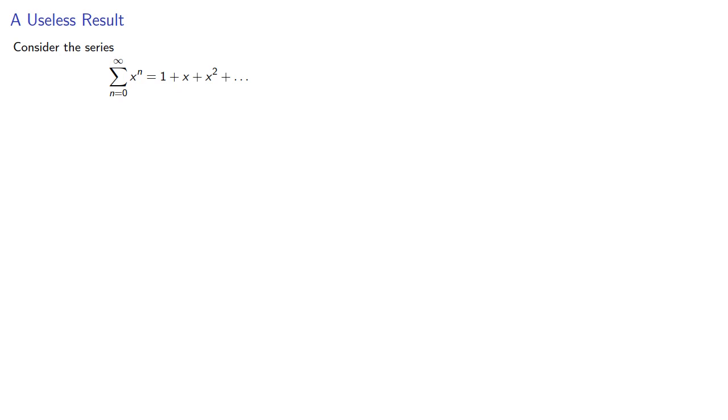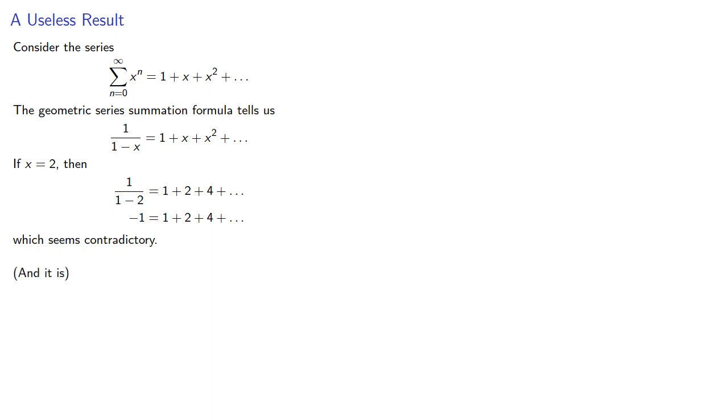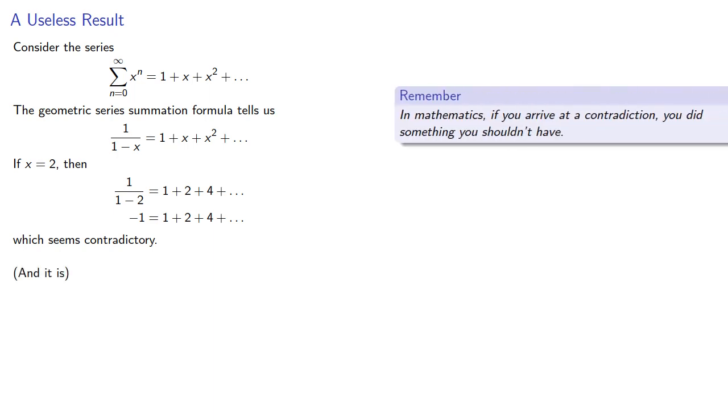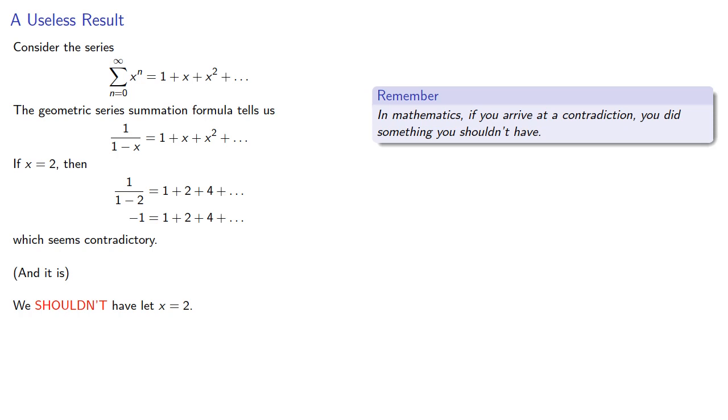Consider the infinite series. The geometric series summation formula gives us a formula for the sum of the series. Now if x is equal to 2, we can substitute, and we find which seems a little contradictory. And it is. And it's useful to remember in mathematics, if you arrive at a contradiction, you did something you shouldn't have. And in this particular case, we shouldn't have let x equal 2.